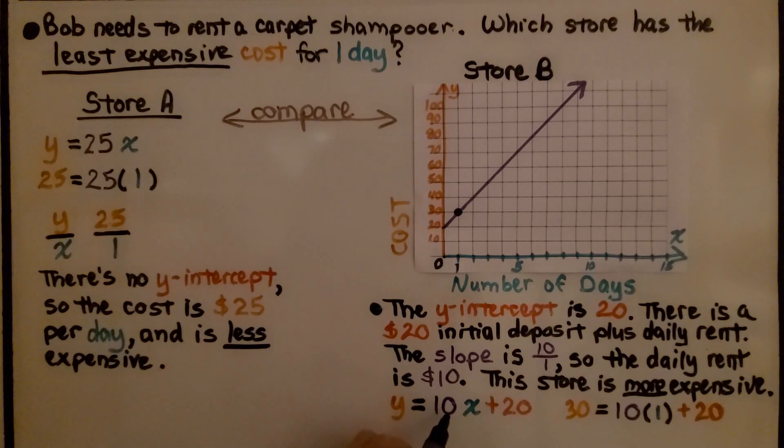We would have the slope of 10 times the number of days plus the initial $20. If we put 1 for x, we're going to have a total cost of $30 for one day. This is more expensive than store A.